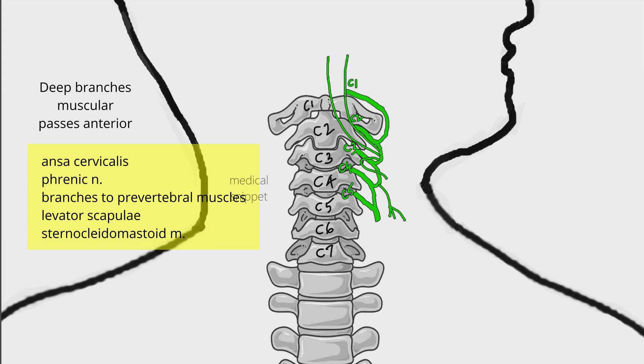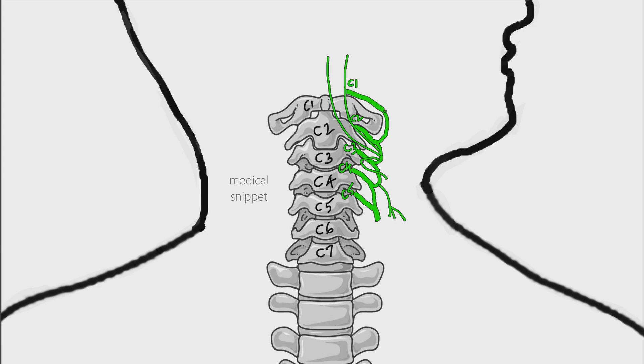Now let's discuss ansa cervicalis. A branch from the loop between C1 and C2, carrying C1 nerve fibers, joins the hypoglossal nerve. After a short course it leaves the hypoglossal nerve as superior root of ansa cervicalis.